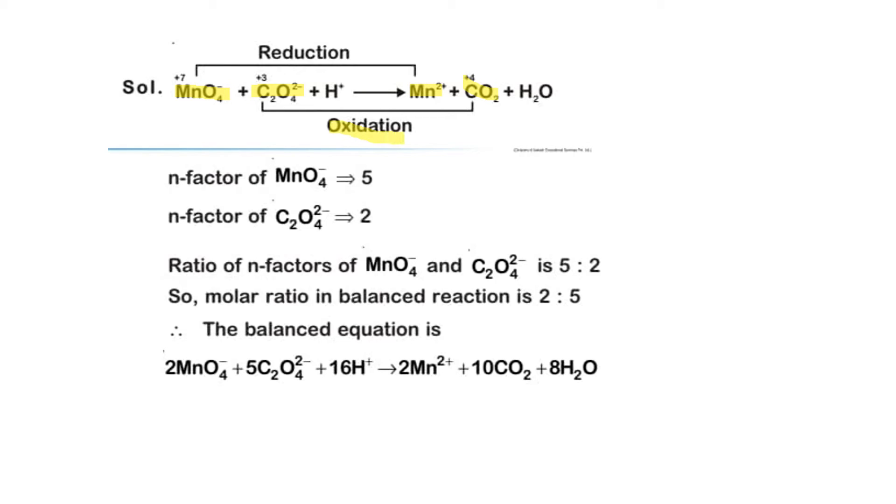Let's find the n-factor. The n-factor of MnO4^- is 5, and the n-factor of C2O4^2- is 2. So the ratio of n-factors of MnO4^- and C2O4^2- is 5:2.